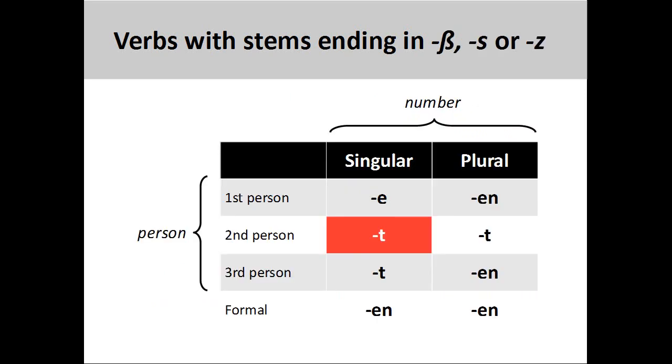Finally, a few regular verbs have a stem ending in '-ß', '-s', or '-z', which requires another slight variation to the conjugation pattern. The second-person singular ending drops the 's' from the regular '-st' ending. This exceptional ending is marked in red on the screen.